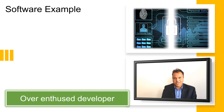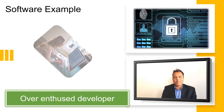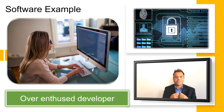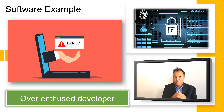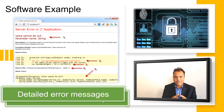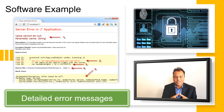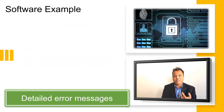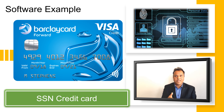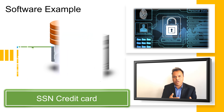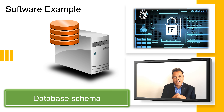In software applications, information disclosure is commonly caused by developers providing too much information in error messages. For example, an error displayed on screen might reveal a person's social security number, credit card details, or backend database schema — including table names and column names. A hacker can easily exploit this information to launch further attacks.